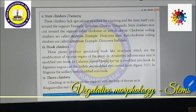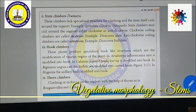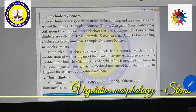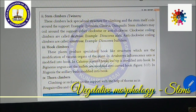Hook climbers produce a specialized hook-like structure, which is the modification of various organs. In Artabotrys, the inflorescence axis is modified into a hook. In Calamus (Curduku), the leaf tip is modified into a hook. In Bignonia and Tecoma, the leaflets are modified into hooks. In Hugonia, the axillary buds are modified into hooks. Thorn climbers: certain plants have thorn-like structures which act to help climbing — example Bougainvillea and Carissa.